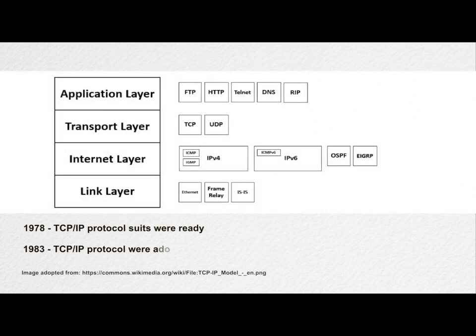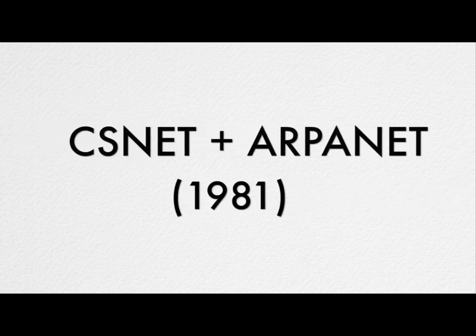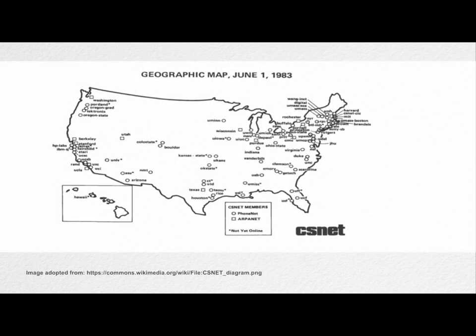Now there were many parallel systems working on different protocols, and scientists were looking for common standards so that networks could be interconnected. In 1978, TCP/IP protocols were ready, and by 1983 the TCP/IP protocols were adopted by ARPANET. In 1981, the integration of two large networks took place — NSF developed a Computer Science Network known as CSNET, which was connected to ARPANET using the TCP/IP protocol suite.